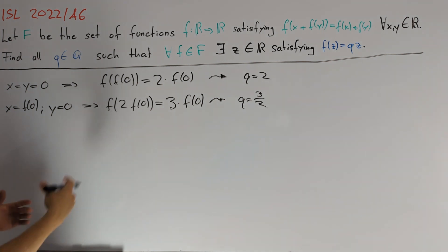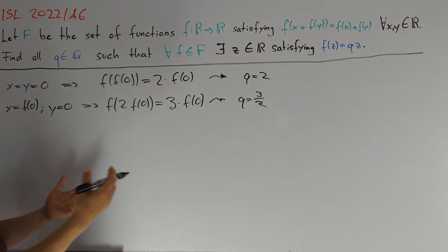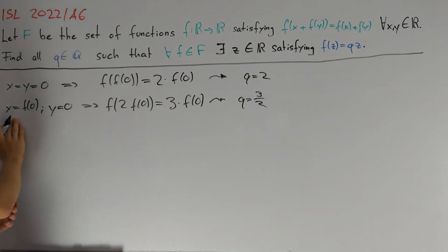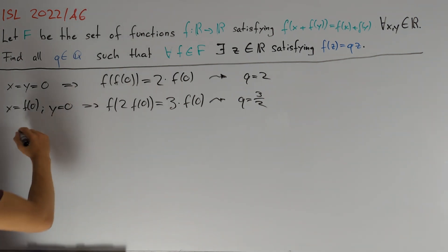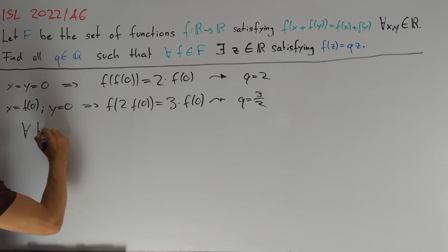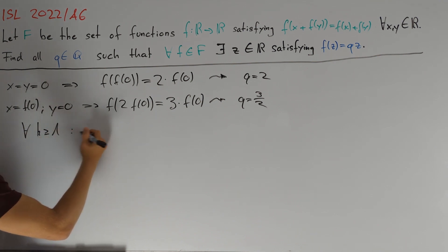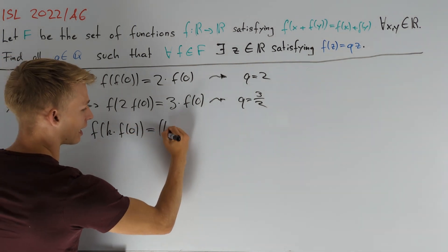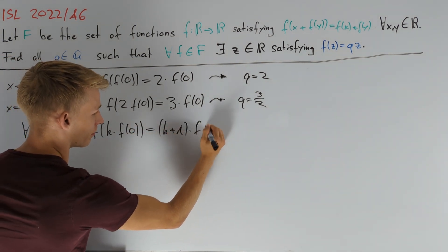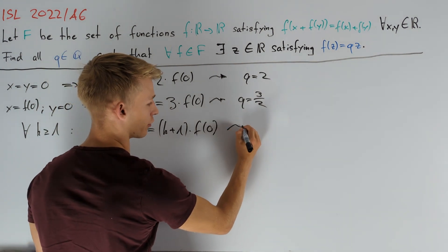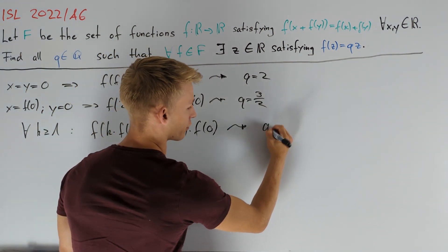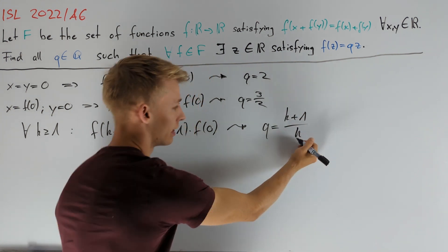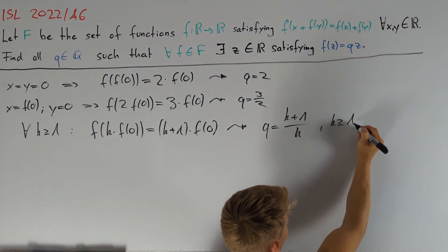At this point we see that we can continue with this strategy — for example, plugging in two times f of zero for x into the functional equation. Using induction, this allows us to prove that for all k greater than or equal to one, f of k times f of zero equals k plus one times f of zero. This gives us a whole set of values for q, namely all values q equals k plus one divided by k for k greater than or equal to one.